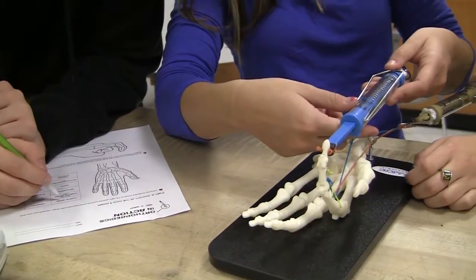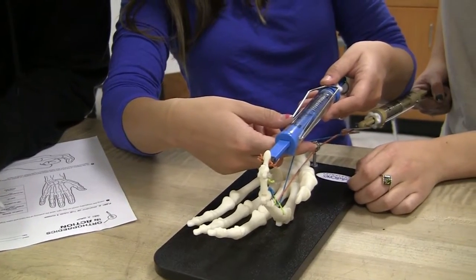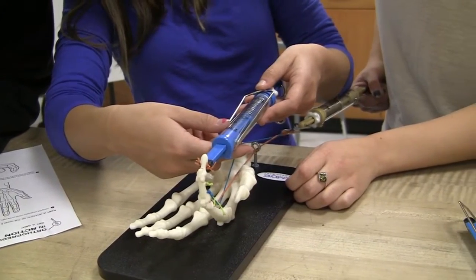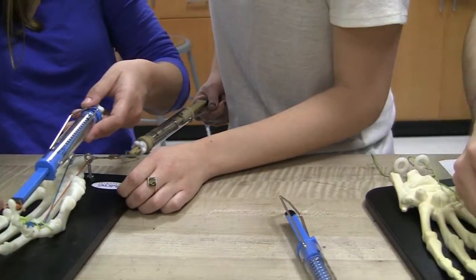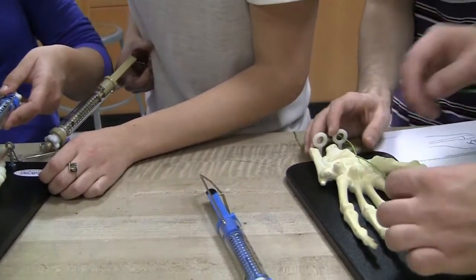Orthopedics in Action consists of five different lessons ranging from designing an external fixator to diagnosing knee ligament tears. These lessons can be incorporated into grades 6 through 12 classrooms.